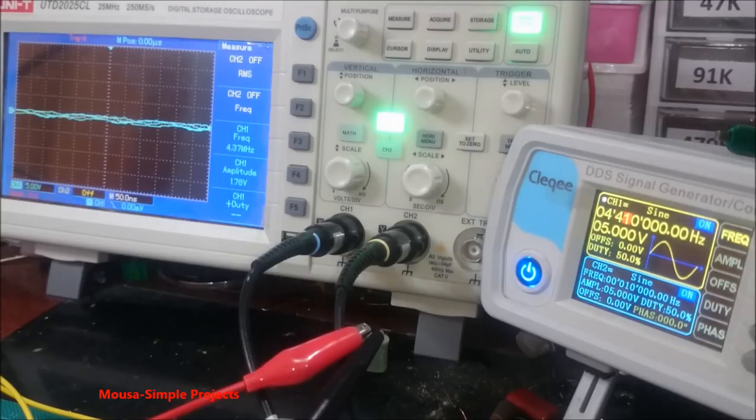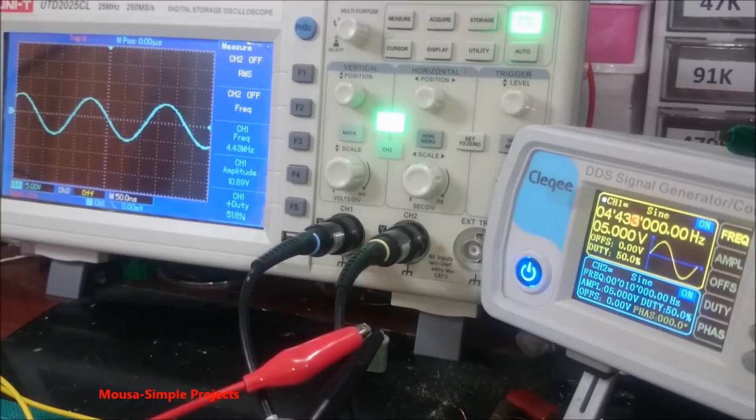When the function generator frequency reaches the resonance frequency of my crystal, the voltage jumps to a higher value.